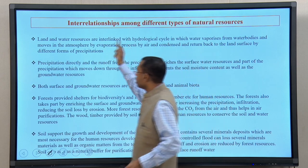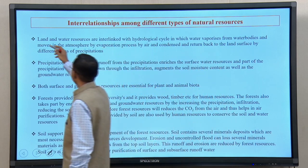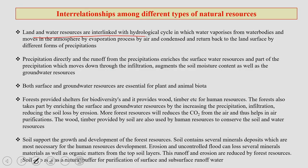Whether you talk about land or water resources, they are interlinked through the hydrological cycle. They are also linked to the atmospheric cycle — precipitation is directly and indirectly related with groundwater management systems, and both surface and groundwater resources are essential for plant and animal life.